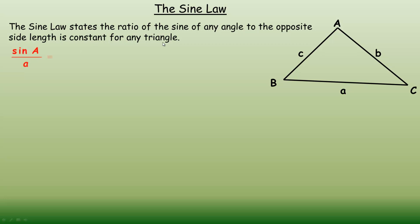There are two ways to write the sine law. The ratio of the sine of any angle — so the sines are on top — so the sine of angle A divided by the length of side A, where angle A and side A are opposite each other, equals the sine of angle B divided by its opposite length, equals the sine of angle C divided by its opposite length.